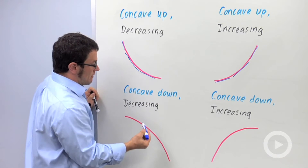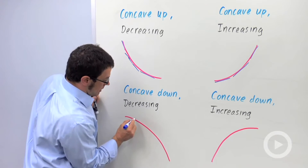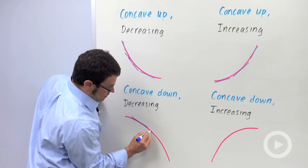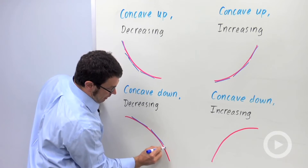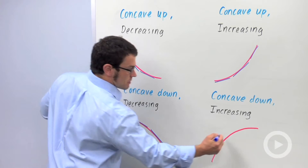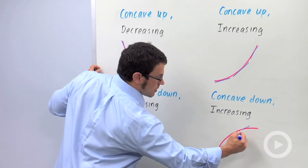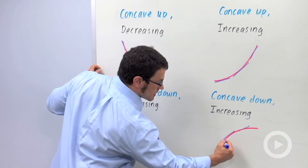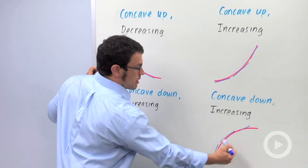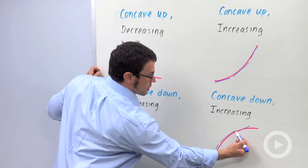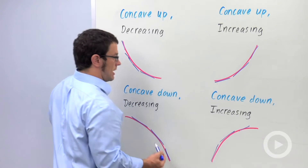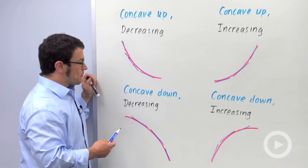Now if a graph is concave down, it'll do the opposite — the tangent lines will be above the graph. So in both of these concave down cases, the curve lies below the tangent lines. That's concave down.